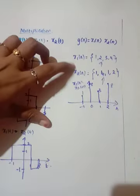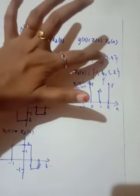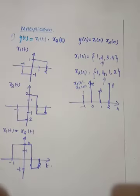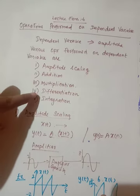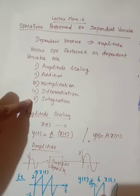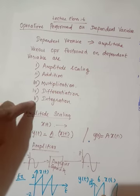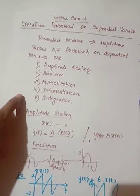For discrete time, x1(n) · x2(n) is direct element-wise multiplication, giving values {1, 8, 3, 8}, which I have plotted. So far, we have discussed these three operations: amplitude scaling, addition, and multiplication. Differentiation and integration will be discussed after covering the basic signals and some important concepts — only then will you understand those concepts. Thank you.